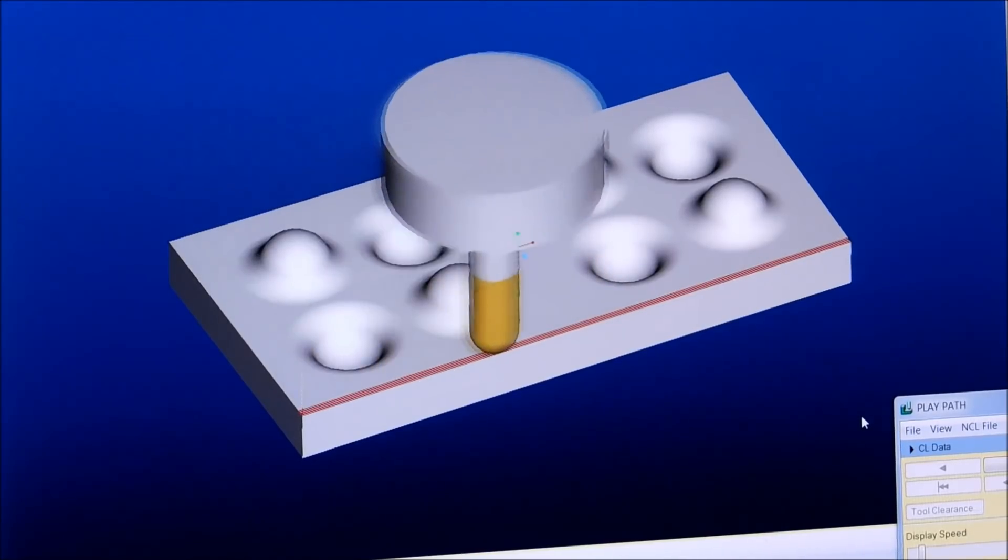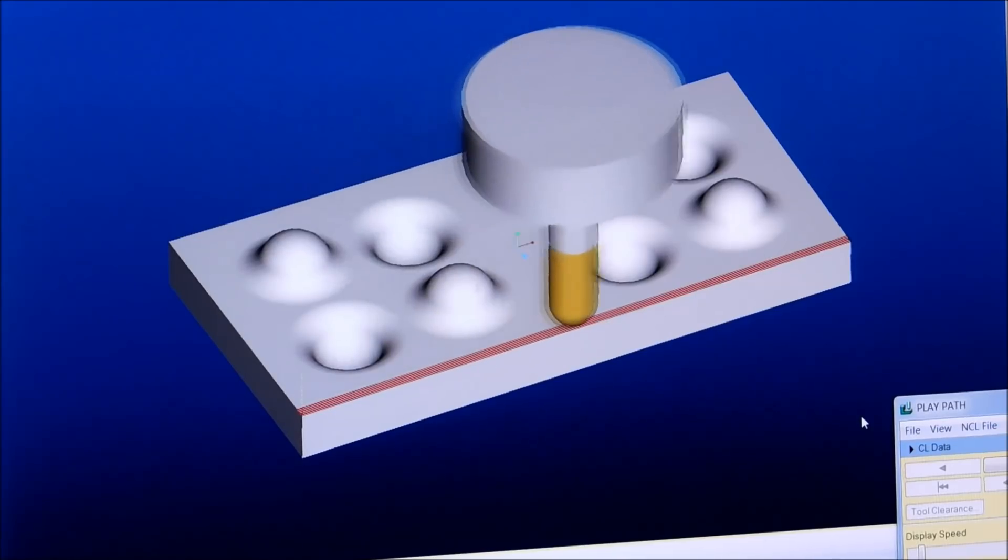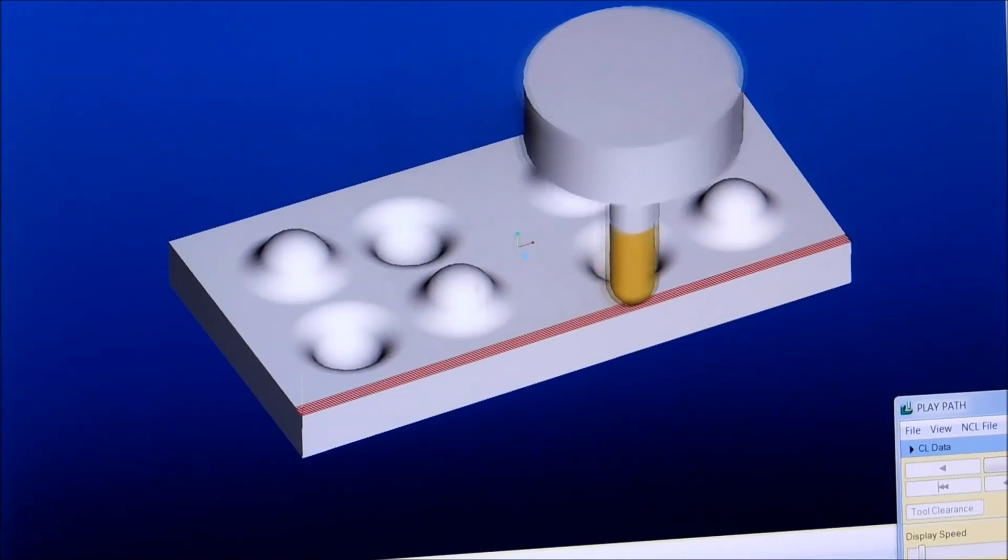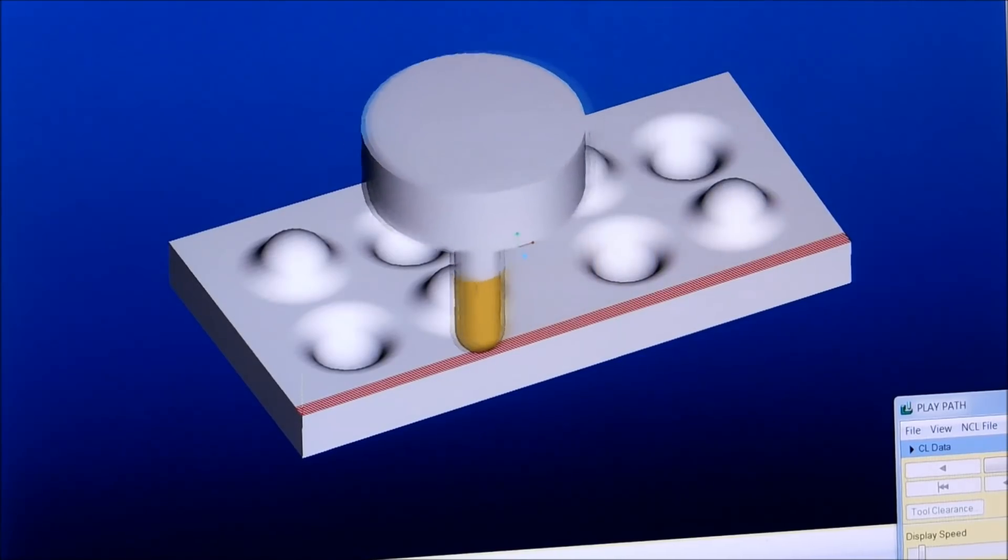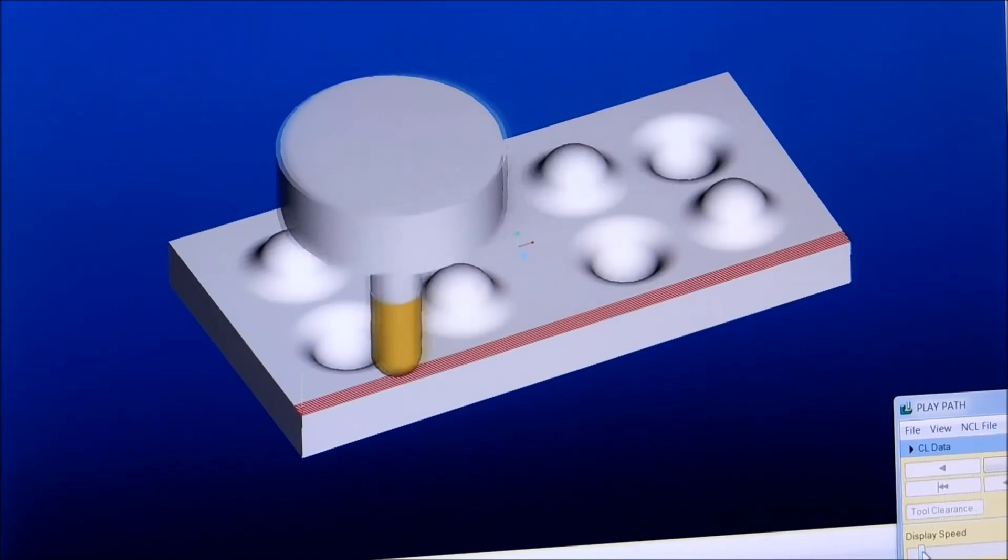Now, you would be surprised how many things around you were done this way. When there's no other way to machine a part, what you do is you take something with an extremely small radius on the nose, and you just track it back and forth until the shape ultimately comes out.